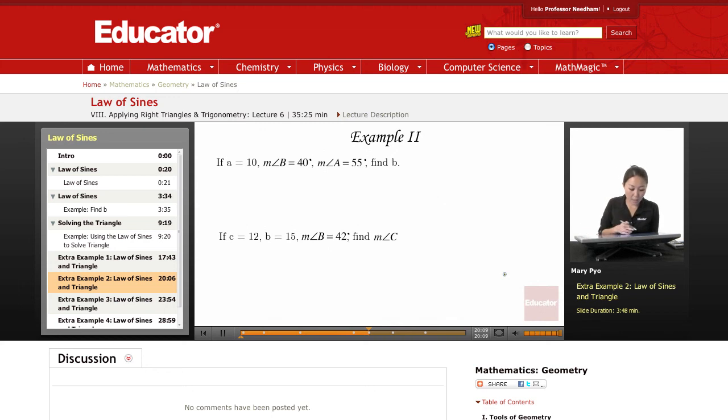Example 2. Here, they don't give you a triangle. They're just giving you these measures. So A is 10, measure of angle B is 40, measure of angle A is 55 degrees. Find B.